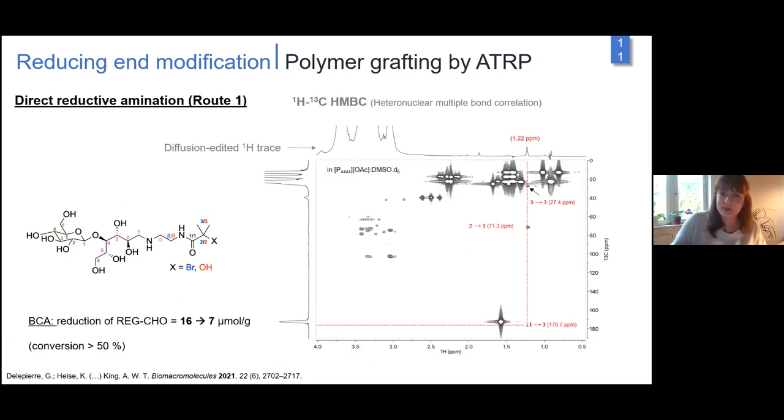We use different 1D and 2D NMR techniques. A key is using cellobiose models to replicate reactions on CNCs and simplify signal assignments. This is a 2D NMR spectrum, an HMBC showing multiple bond correlation from proton to carbon. One key technique is diffusion editing using diffusion ordered spectroscopy, which edits out everything only absorbed to the CNC surface.